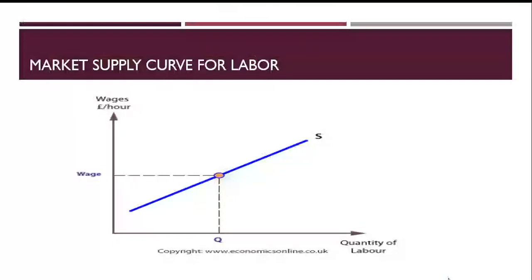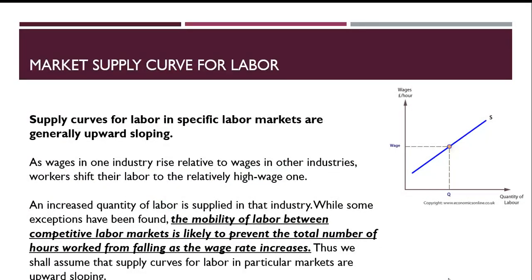It is upward sloping because as you offer more wages, the people who are going to work in the industry are going to move towards this particular industry and market. If you remember, the individual supply curve always had a backward bend, but that does not happen in the case of the industry supply curve, and there are reasons for that.